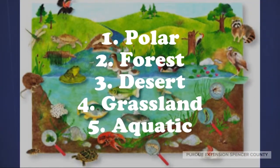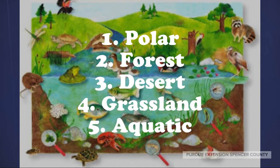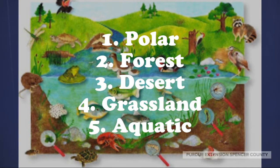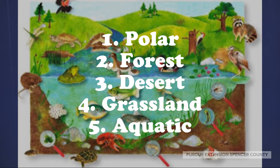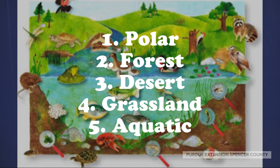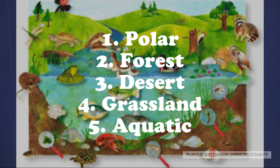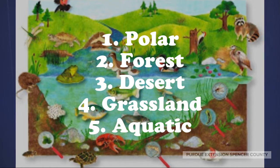There are five main categories of habitats in the world: polar, forest, desert, grasslands, and aquatic. All of these have unique weather and environmental conditions. So let's get started with the polar tundra.